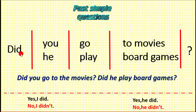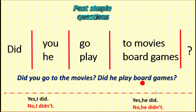Tengo la respuesta para esas preguntas. Por ejemplo: 'Did you go to the movies?' — dos alternativas: decir que sí o decir que no. Si te preguntan con 'did', respondes con 'did'. 'Yes, I did' — o en negativo: 'No, I didn't.' And: 'Did he play board games?' — 'Yes, he did' — ¿Él jugó juego de mesa? Sí, lo hizo. Or in negative: 'Did he play board games? No, he didn't.'